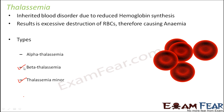Beta thalassemia is a more severe and the most common form. It can be of two types: thalassemia major and thalassemia intermedia. Thalassemia intermedia is more severe than thalassemia minor but less severe than thalassemia major, and it does not need blood transfusions. In thalassemia major, a lot of organs get enlarged, there is paleness, poor appetite, and jaundice, and blood transfusions are often needed — making it a major medical problem.